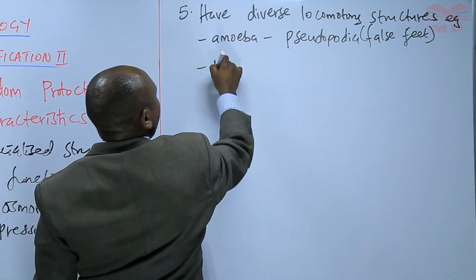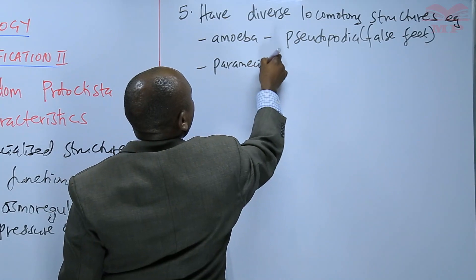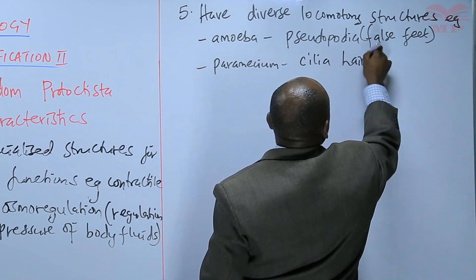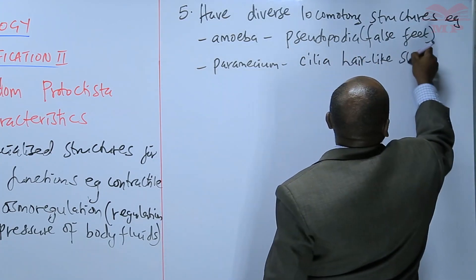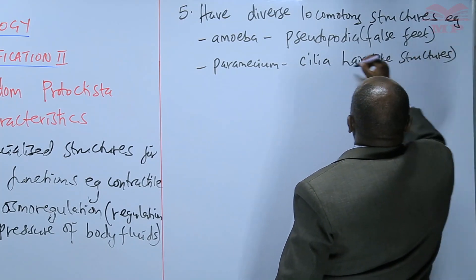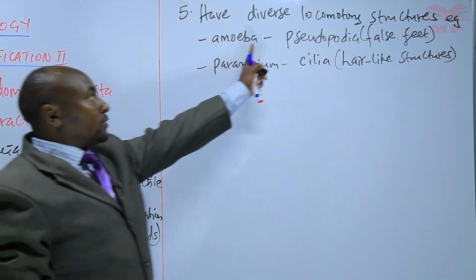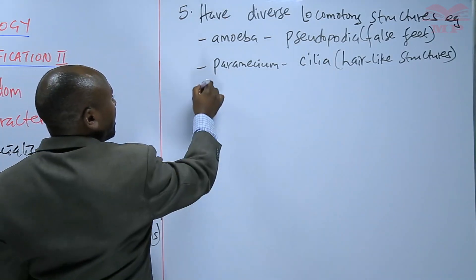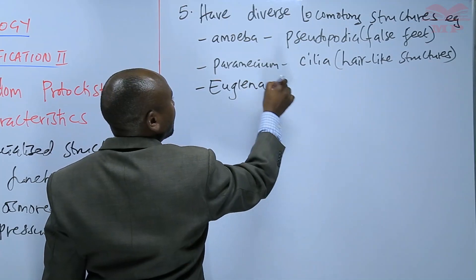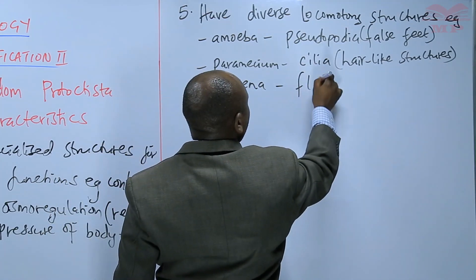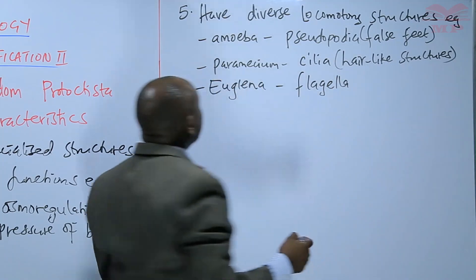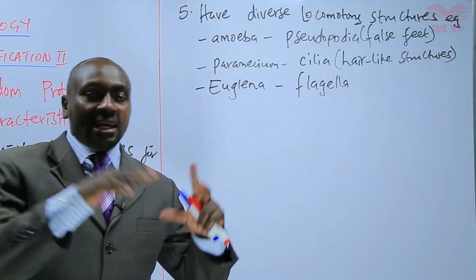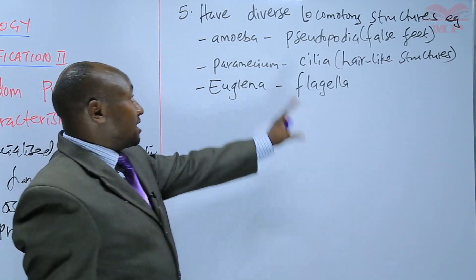When you go to paramecium, this one has cilia, which are hair-like structures meant for locomotion — movement from one place to another. And then we have euglena, which is an algae. Euglena has flagella. So you can see that kingdom Protoctista organisms have many different locomotory structures.